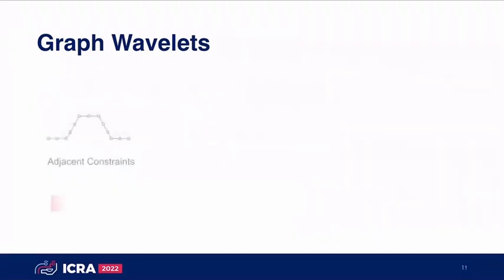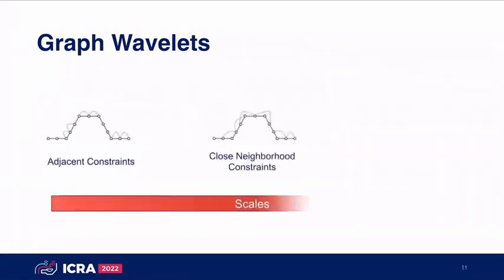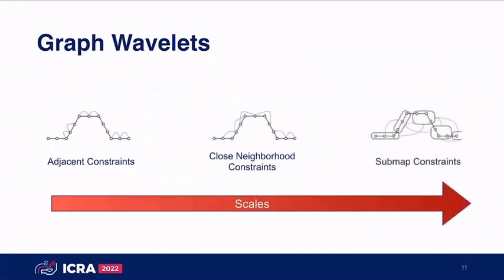This allows us to derive specific constraints depending on where we find inconsistencies in the level of scales — for example, constraints between adjacent nodes, constraints to closer neighborhoods, or constraints between different sub-maps.